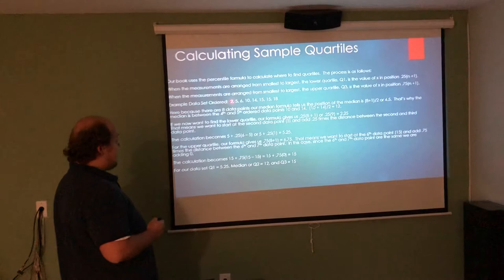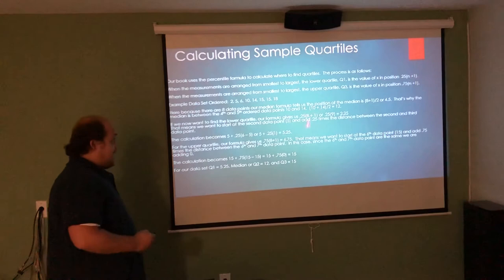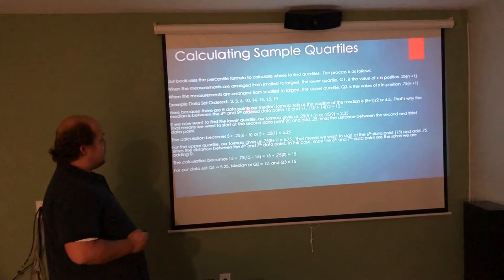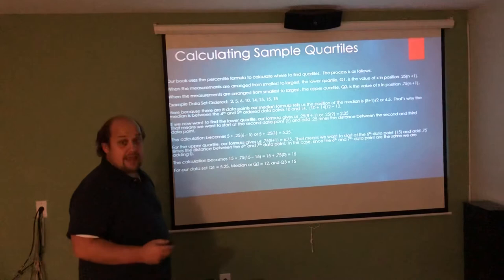So, let's go back to this example data set now. They tell us that this data set, which is in order from smallest to largest, is 2, 5, 6, 10, 14, 15, 15, 18. There's 8 data points here. I think we used it previously in the measures of center when we found the median. We said that with 8 data points, 8 plus 1 over 2 is 4.5. So, we're looking between the 4th and 5th data point. 4th and 5th are 10 and 14, which we add together to get 24. 24 divided by 2 tells me that the median is 12.